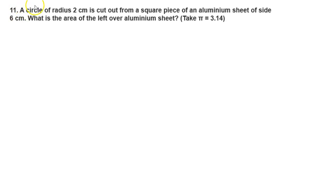Hello to everyone, welcome back to my channel. Today's question is: A circle of radius 2 centimeters is cut out from a square piece of aluminium sheet of side 6 centimeters. What is the area of the leftover aluminium sheet?